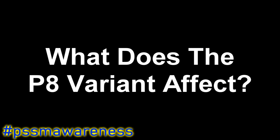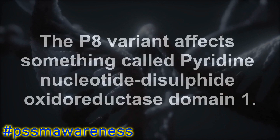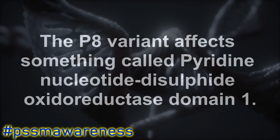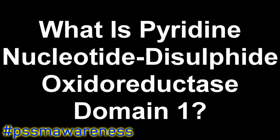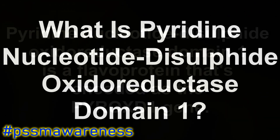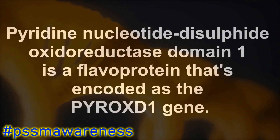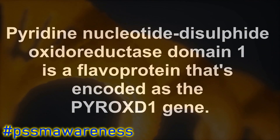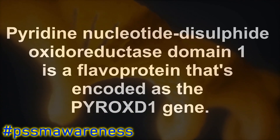What does the P8 variant affect? The P8 variant affects something called pyridine nucleotide disulfide oxidoreductase domain 1. Pyridine nucleotide disulfide oxidoreductase domain 1 is a flavoprotein encoded by the PYROXD1 gene.